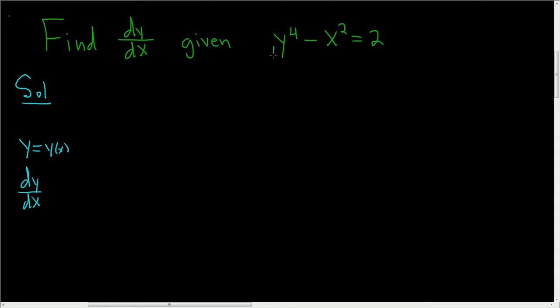We'll start by taking the derivative of both sides of this equation with respect to x. When we take the derivative of y to the fourth, you bring the four down. So you get 4y cubed. And then you have to multiply by the derivative of the inside. Well, the inside function here is just y. And the derivative of y is just dy/dx.